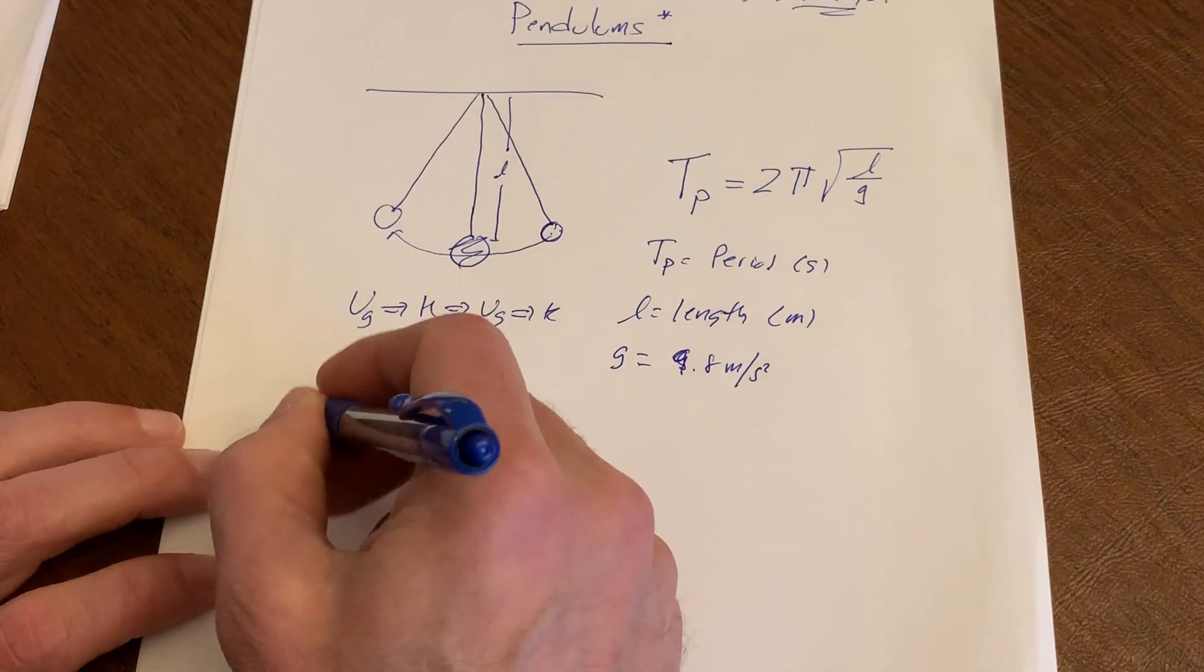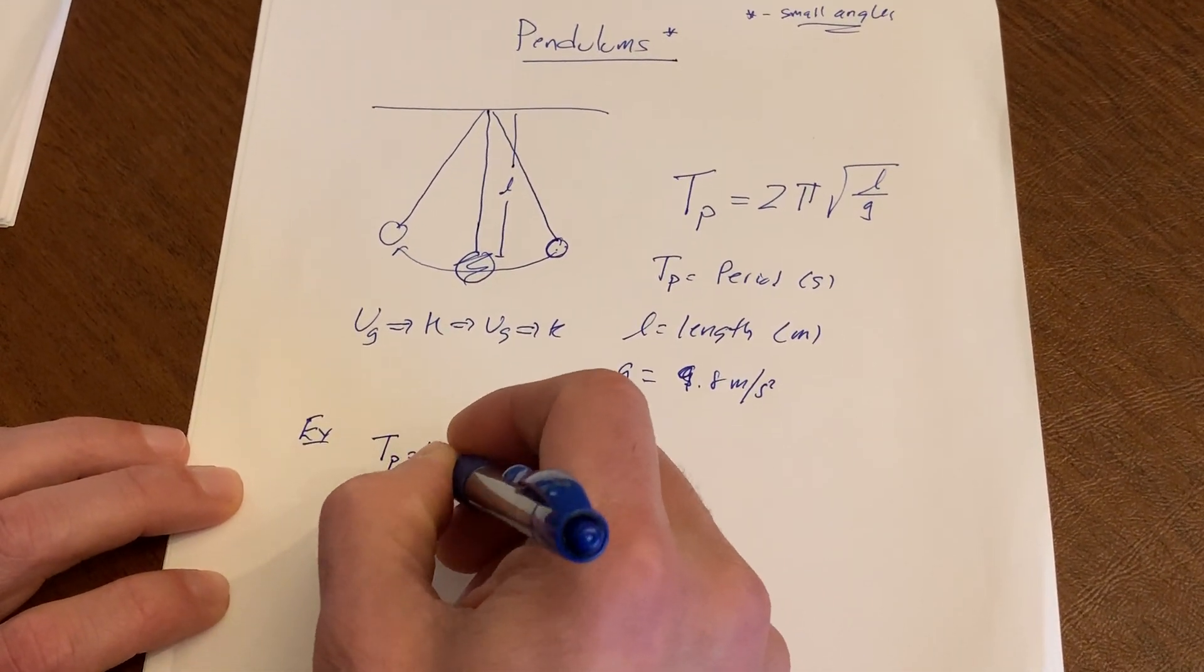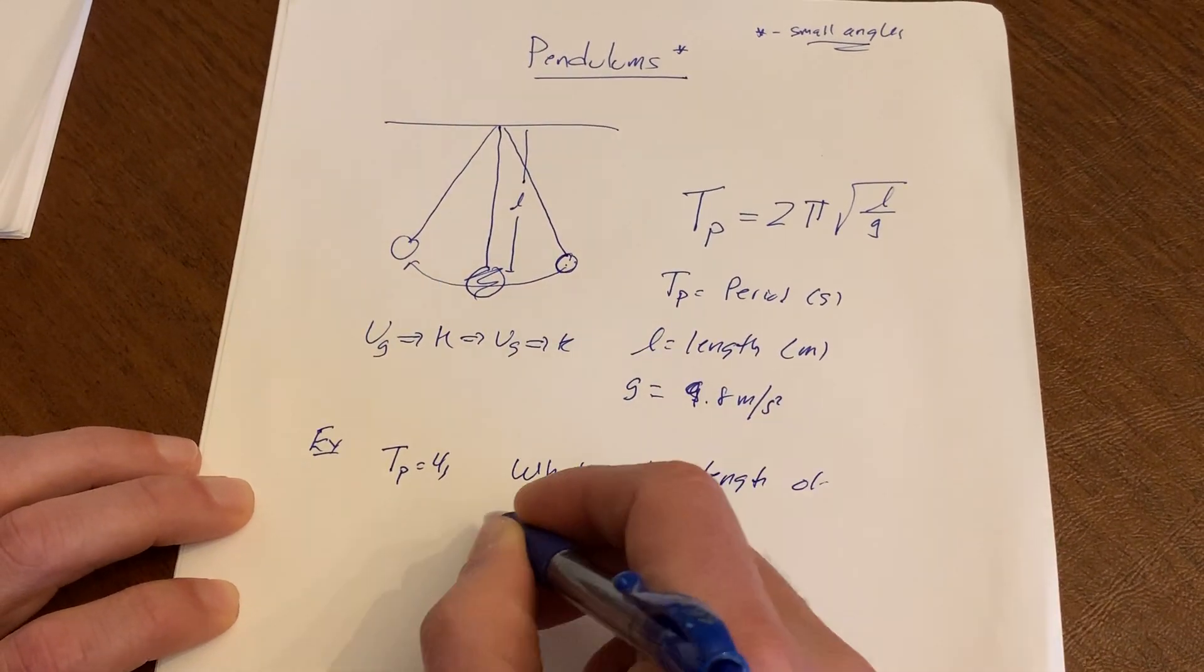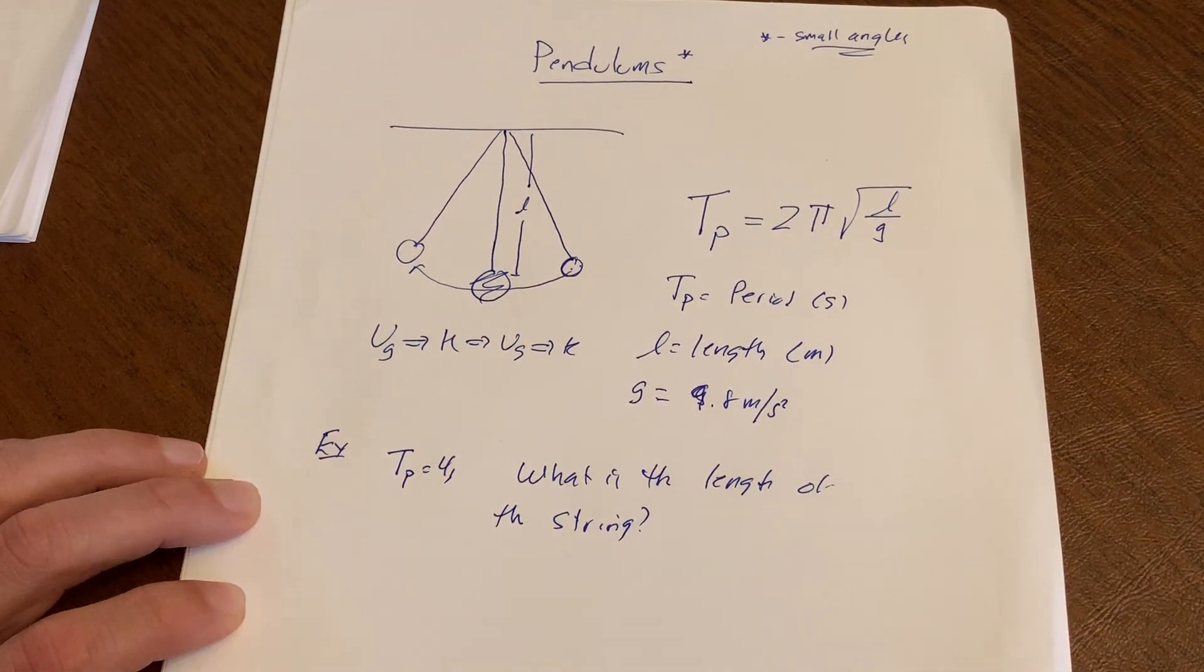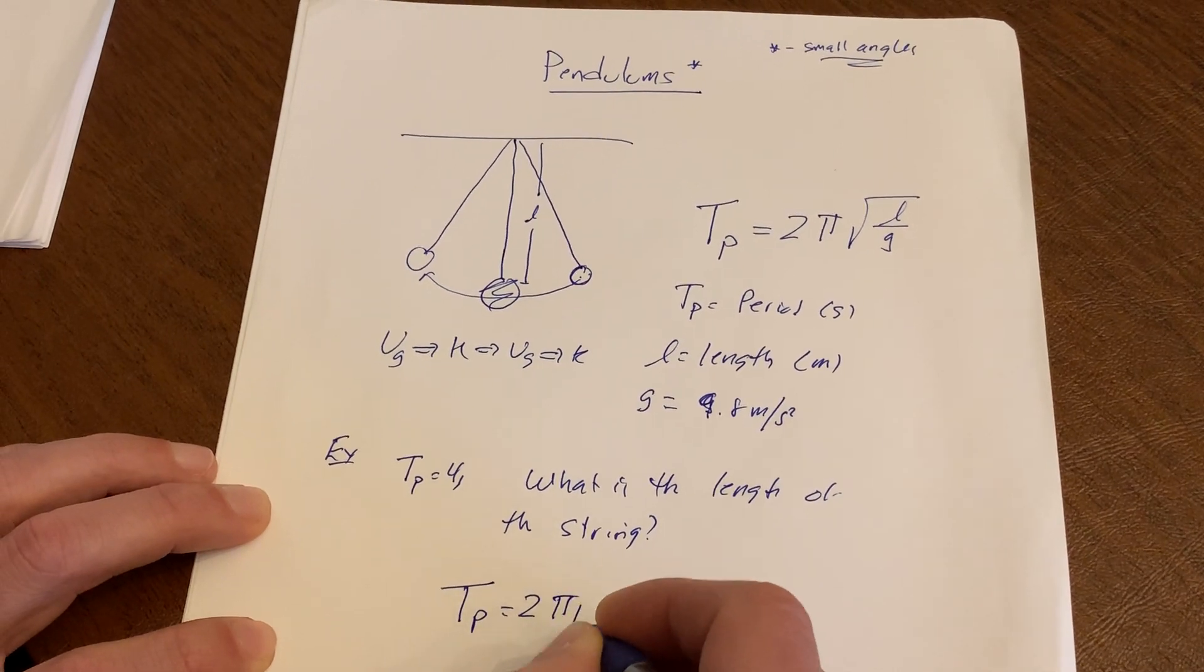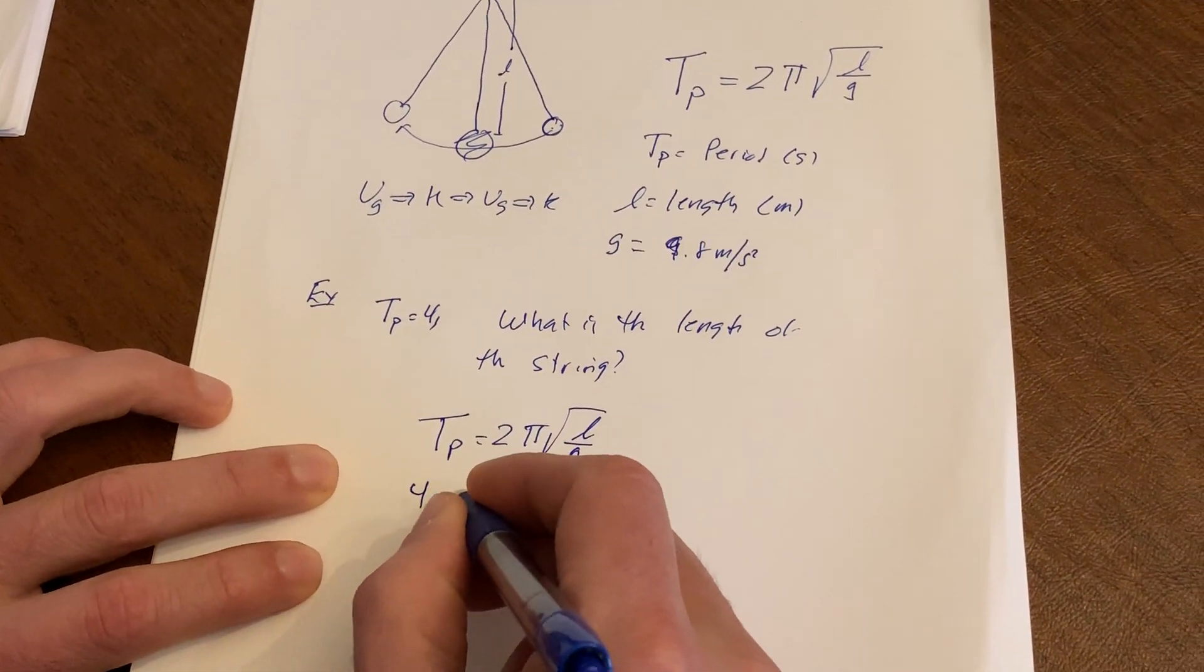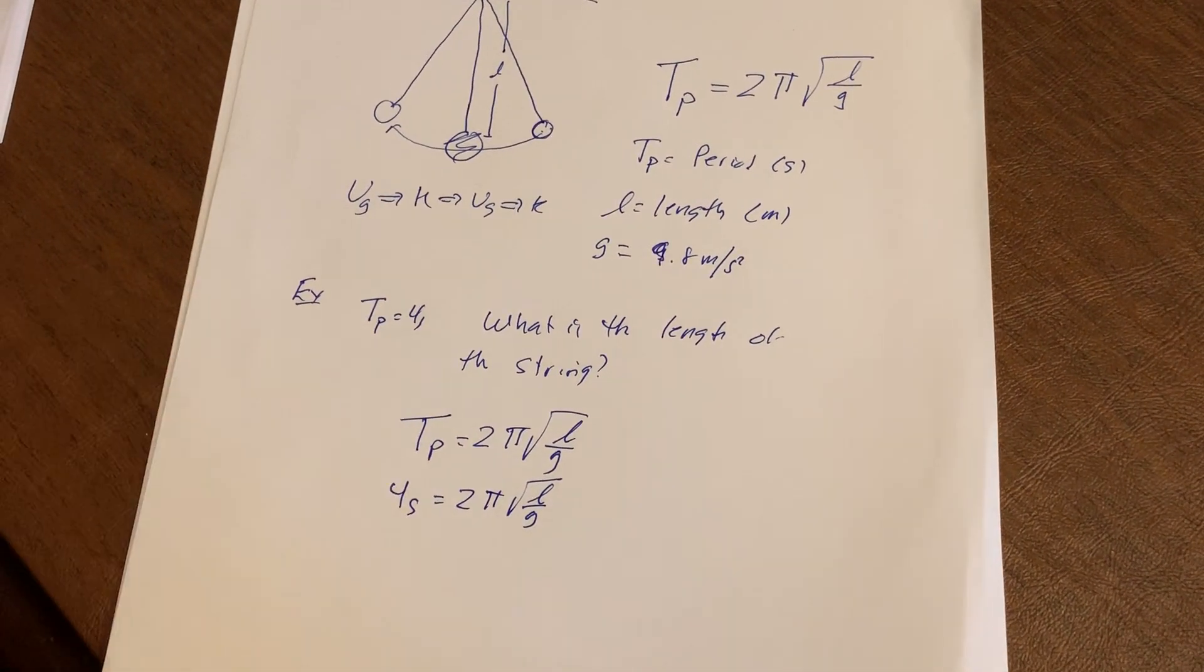Alright, so let's just do a couple problems, and then I'll give you a couple problems of homework, and then we'll kind of be done with this. So let's take a look at an example. So my first example, let's suppose I have a pendulum with a period of four seconds. Alright, well, what's the length? What is the length of the string? So let's take a look. How do I handle this problem?